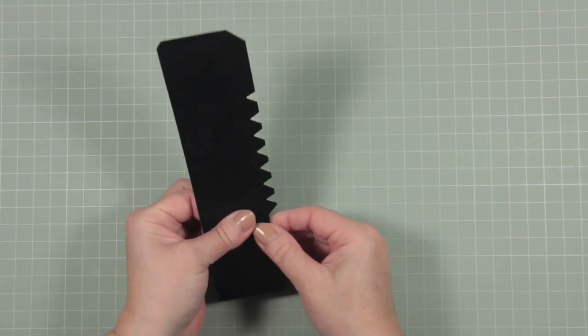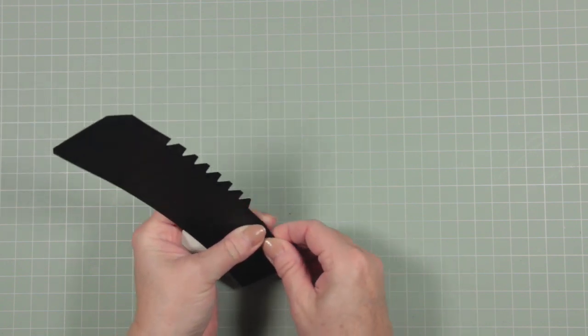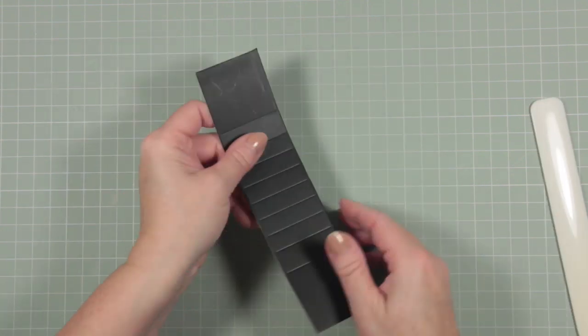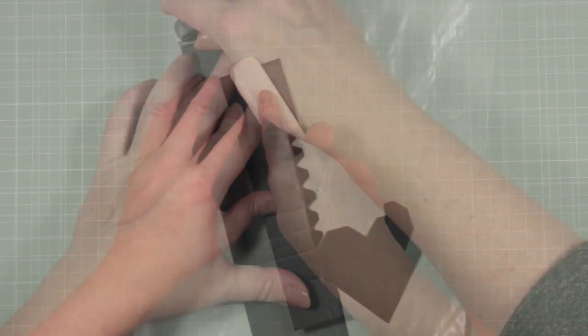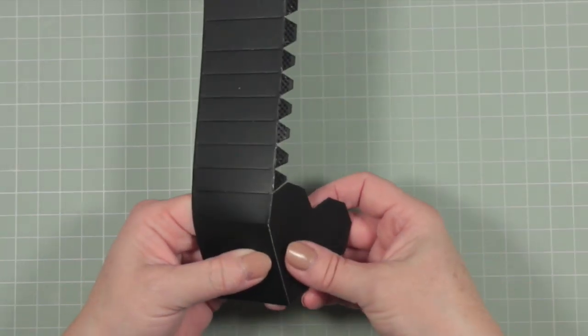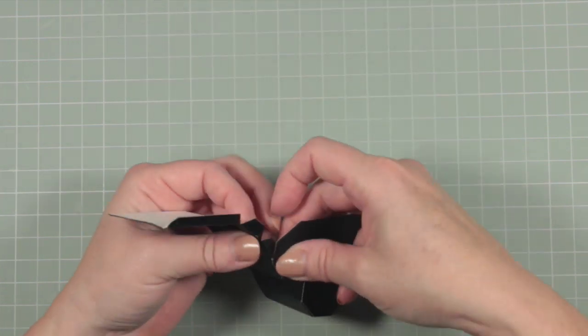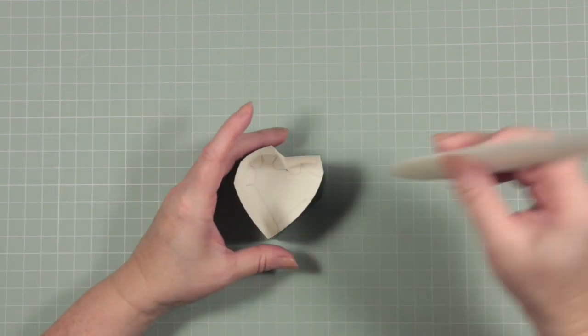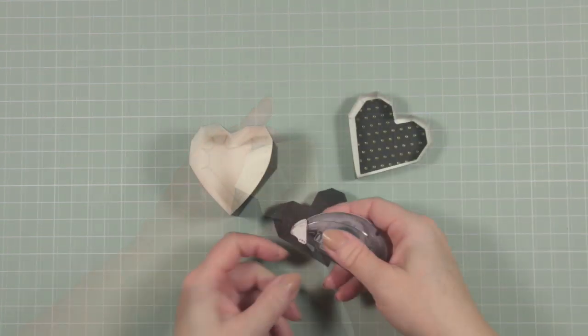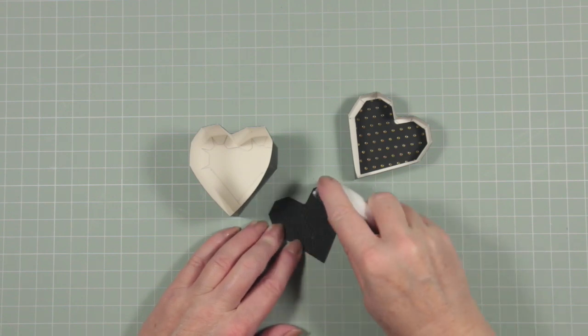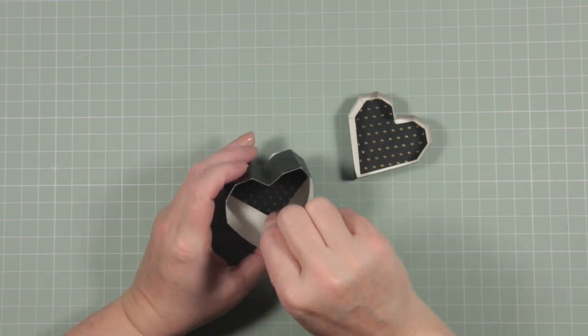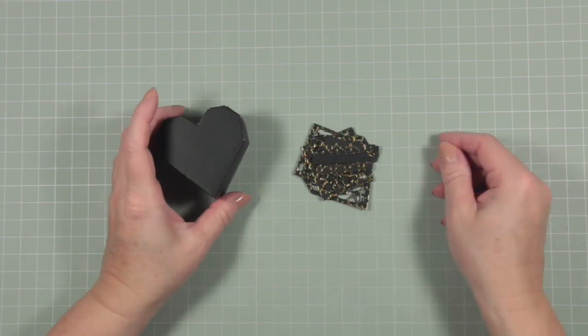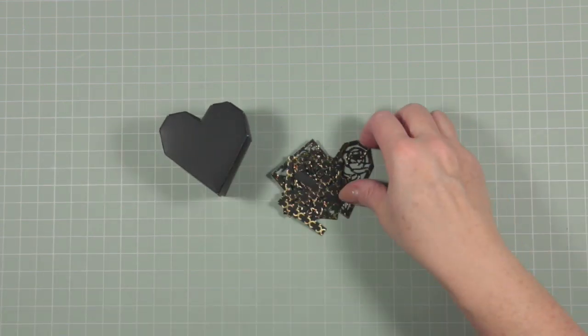I'm going to shape and stick the base of our box in exactly the same way that I did with the lid. The form of our box is complete, and now we can add all the decorations, and this is the fun part.